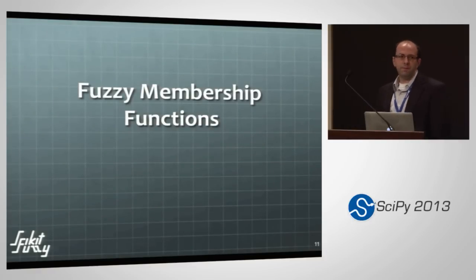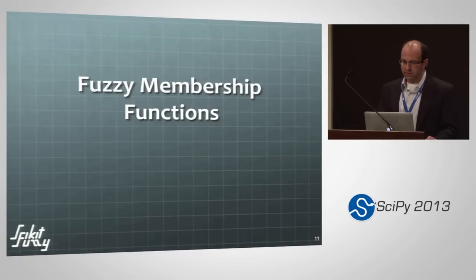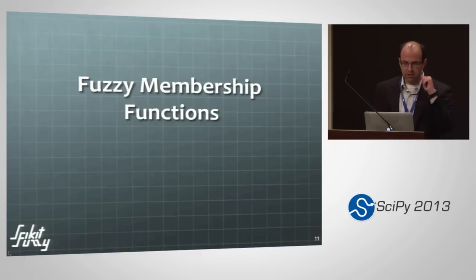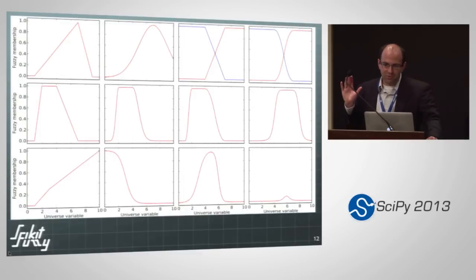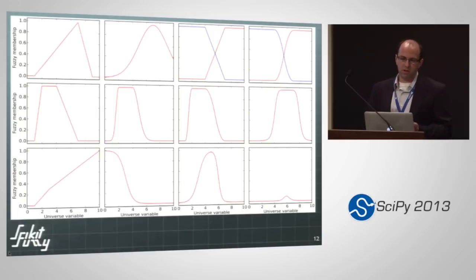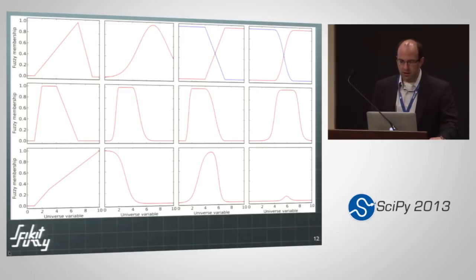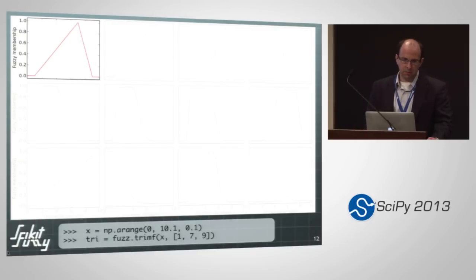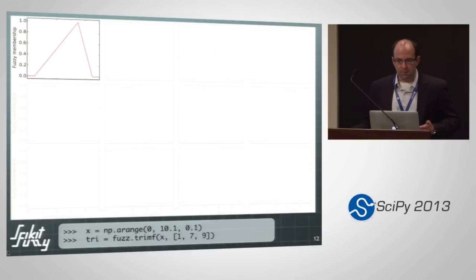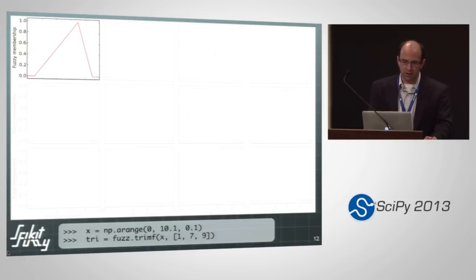All of the membership functions shown were trapezoidal or triangular — that's why the logo looks like it does. It's not trying to ape the Star Trek Next Generation font; it's actually generated using fuzzy membership function generators. There are 12 different membership function generators right now. There are sigmoids, Gaussians, double Gaussians, double sigmoids, and piecewise function generators. None of these are particularly hard to program, but it's overhead you want to get out of the way to attract people from, for example, MATLAB. To generate a membership function it's a simple two-liner: the universe variable and then the triangular membership function.